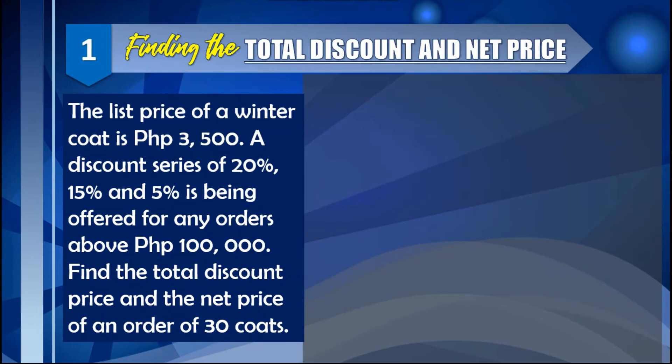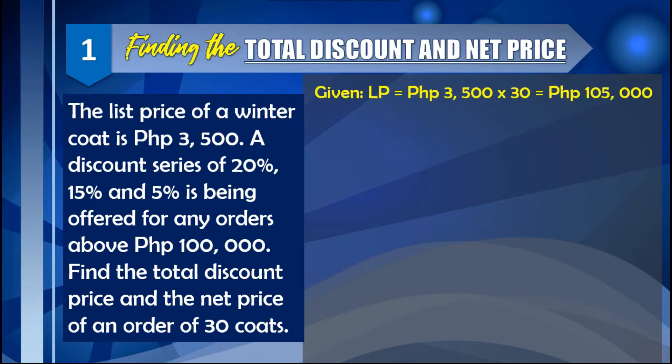First problem: finding the total discount and net price. The list price of a winter coat is 3,500. A discount series of 20%, 15%, and 5% is being offered for any orders above 100,000. Find the total discount and the net price of an order of 30 coats. The list price per coat is 3,500.